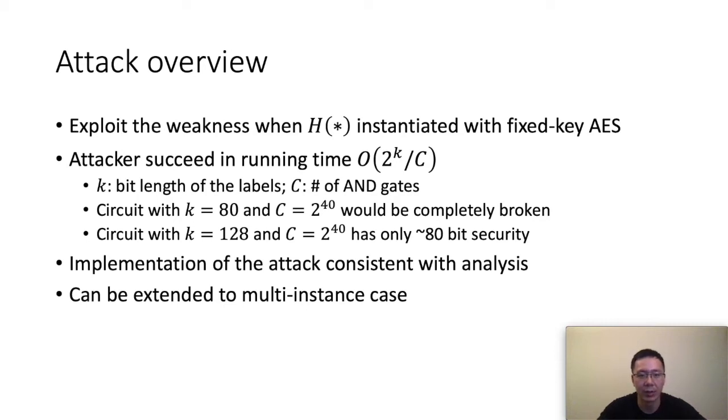The weakness of the half-gate implementation mainly lies in the fixed-key AES-based hash function. In our attack, the attacker succeeds in running time proportional to 2^(k/C). Here, k is the bit-length of the garbled label and C is the number of AND gates in the circuit. If the circuit generator garbles the circuit with an 80-bit label and the number of AND gates in the circuit is 2^40, then the circuit can be completely broken. The attacking time would be within several days, and if we run the attack in the cloud, it would just cost several dollars. The circuit with the bit length of the label 128 and the number of AND gates 2^40 has only more than 80-bit security left.